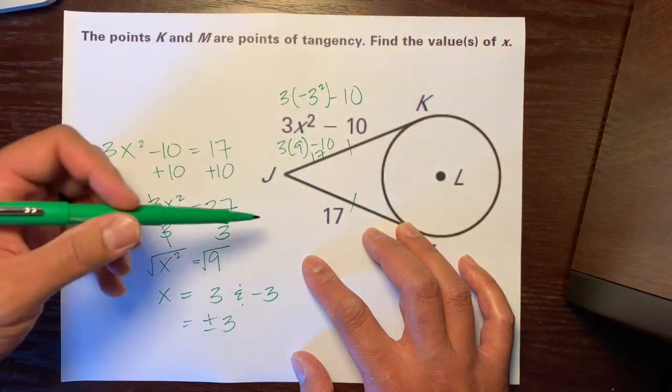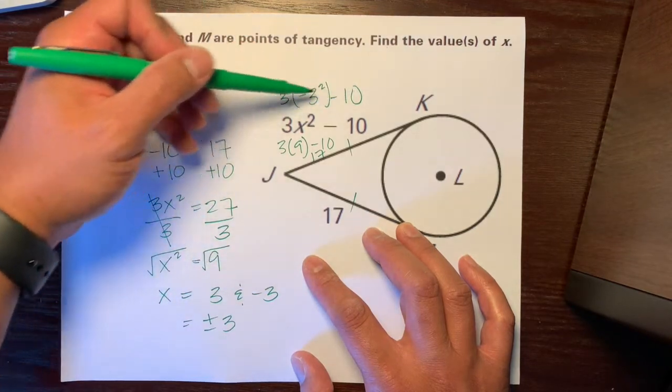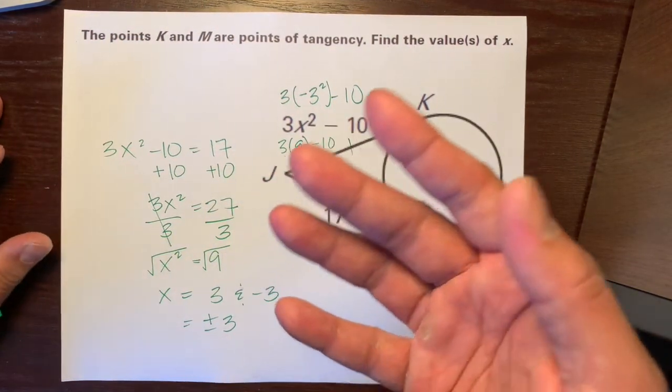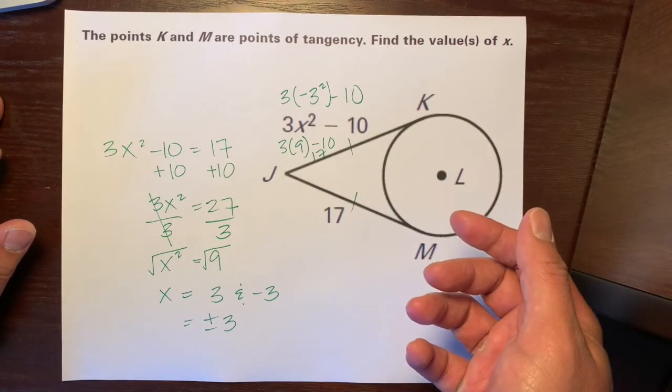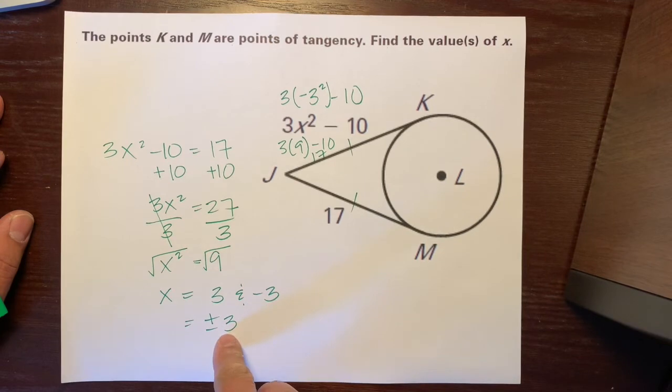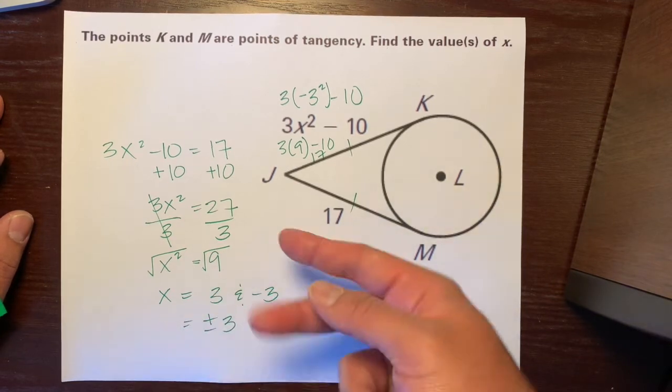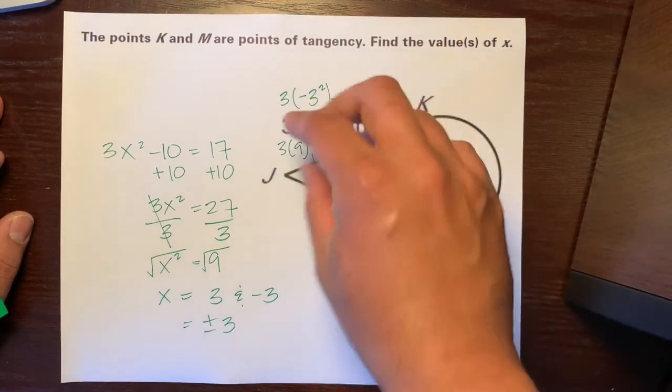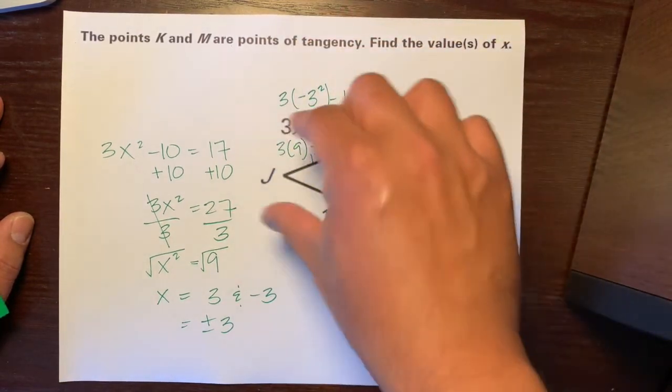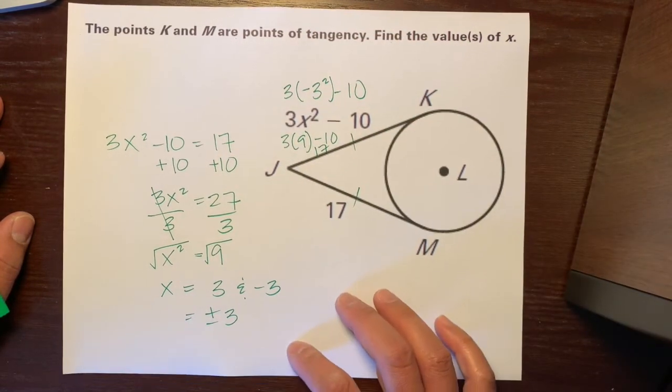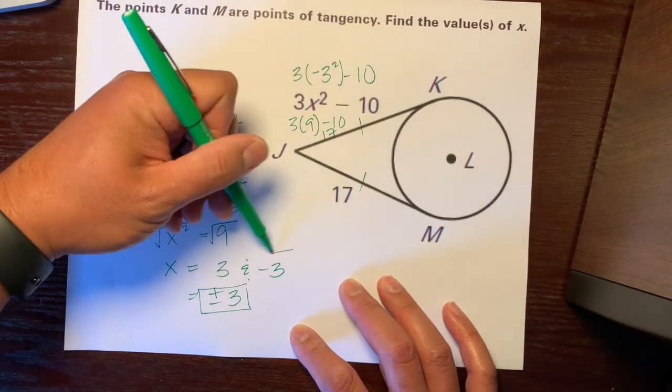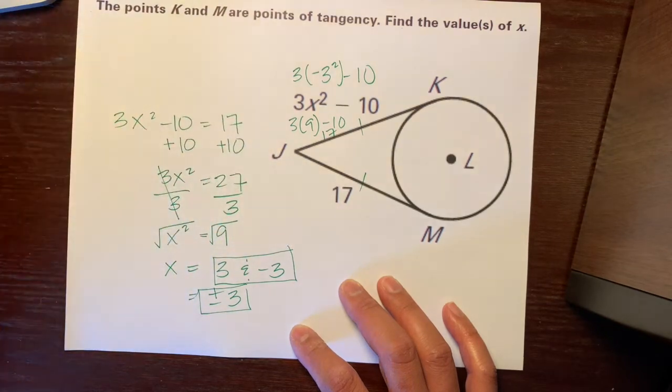So, even, and then if you plugged in the positive 3, you would still get that same answer. 17 is equal to 17. So, when you're in doubt of whether to include the negative 3 or even the positive 3, plug both answers in to make sure both of them work. And then they show that both segments are equal to each other. So, here you go. So, your answer is plus or minus 3 or you could write it as 3 and negative 3.